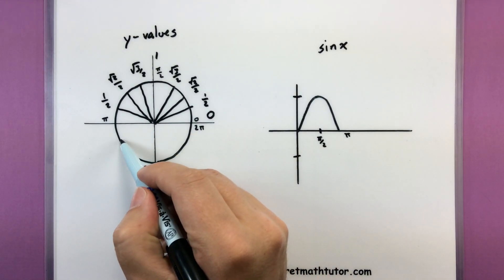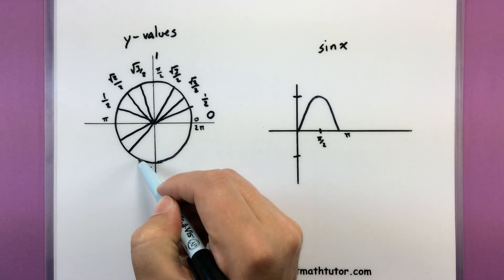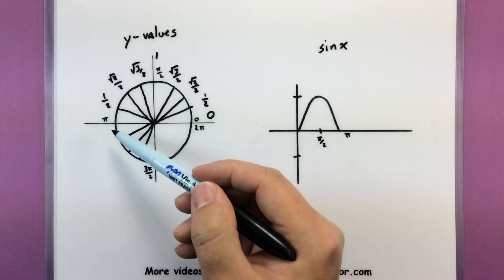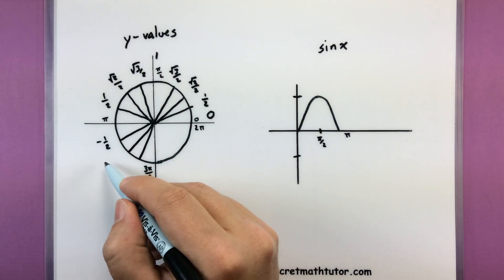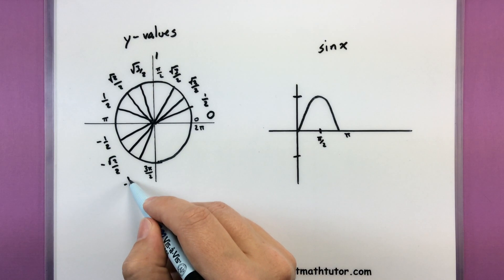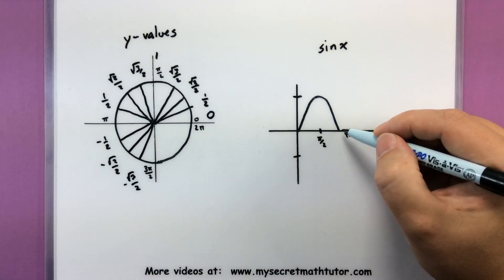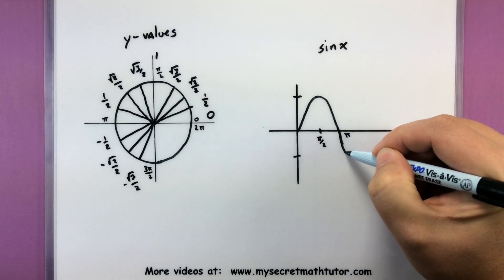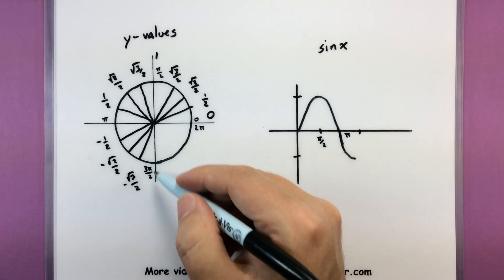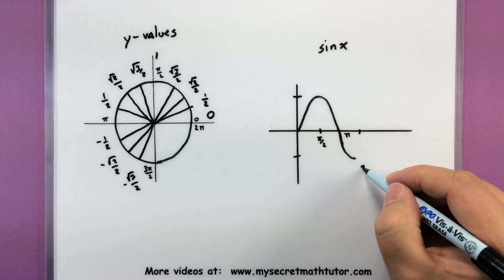So this is that pi. As we continue to sweep around the unit circle, we get the same values. But now that we're below the x-axis, we're getting the negatives. So negative 1 half, negative square root of 2 over 2, and negative square root of 3 over 2. So almost the exact same shape, but now we're in the negatives. And we bottom out right here, this is when we're straight down at 3 pi over 2.